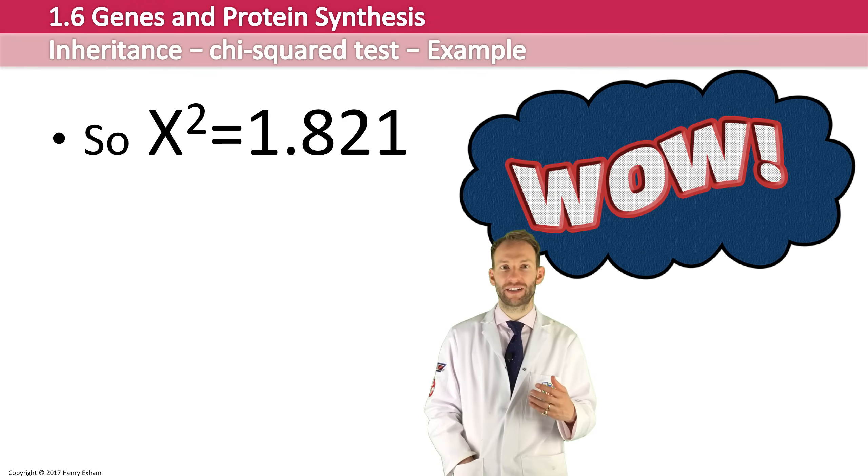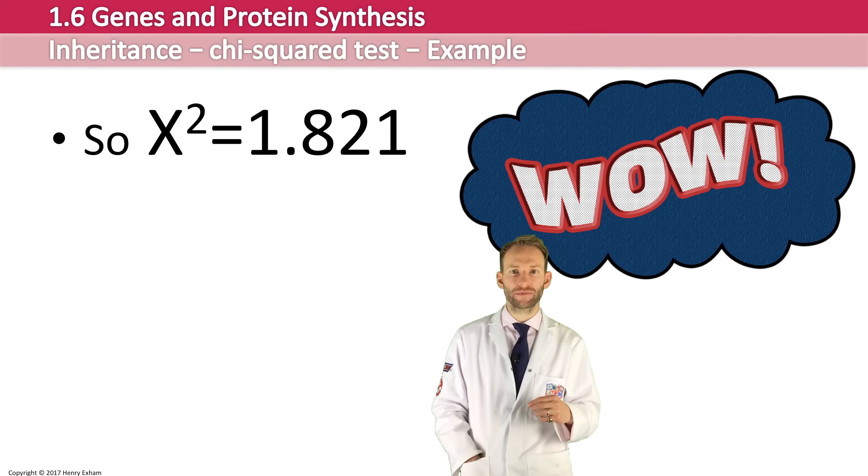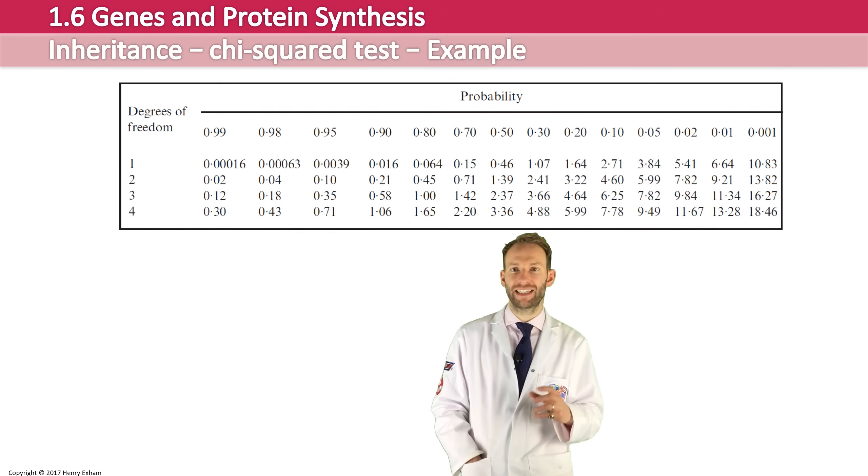Is that good? Is that bad? I don't know. We're going to need to do a little bit more work before we can say what that actually means. So we can take the value and look up the probability in what we call a chi-squared table. So here's a typical chi-squared probability table that you'll be provided with if you need one.